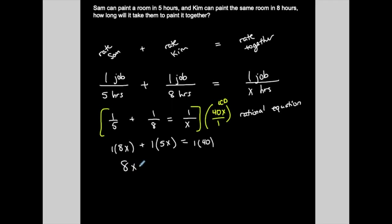So, I have 8x plus 5x is equal to 40, and then 8 plus 5, 13x is equal to 40, divide both sides by 13, x is 40 over 13.